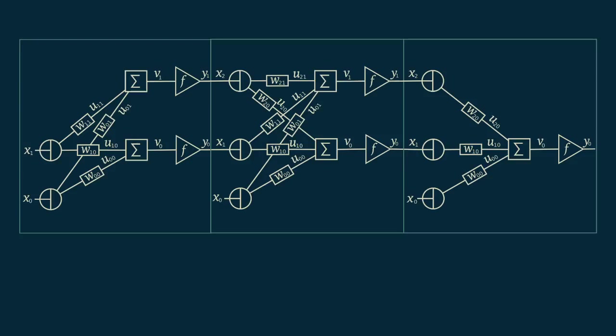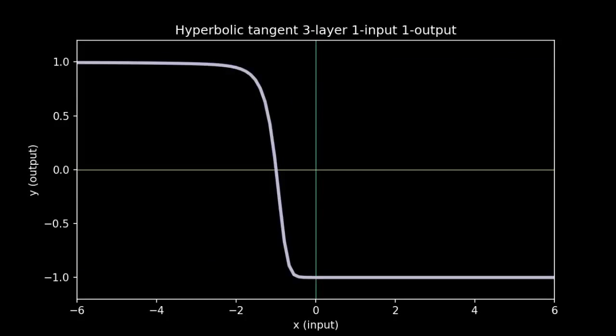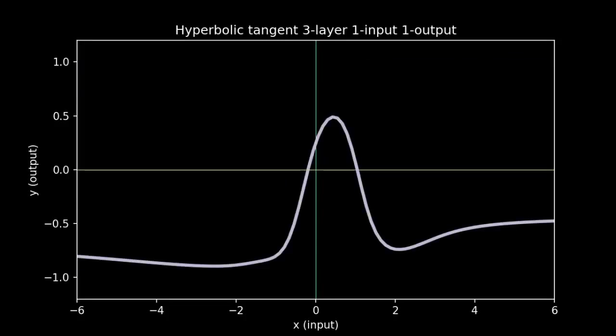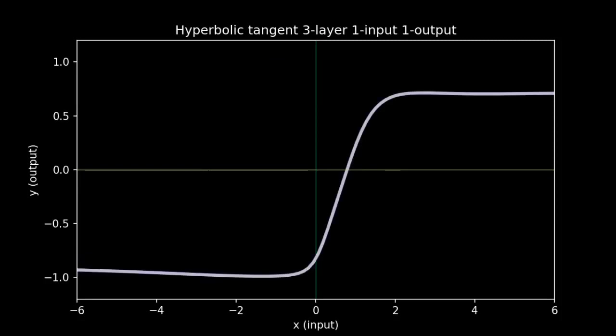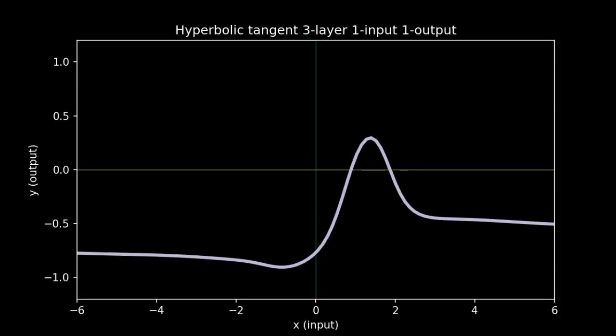We can take the next step and add another layer to our network. Now, we have a set of hidden nodes between layer one and layer two, and another set of hidden nodes between layer two and layer three. Again, we choose random values for all the weights and look at the types of curves it can produce. Again, we see wiggles and peaks, valleys, and a wide selection of shapes.